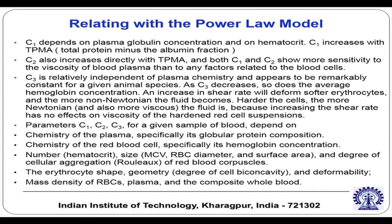It is the hematocrit — the volume fraction of red blood cells — that plays a significant role in altering blood rheology. In describing how the consistency index and behavioral index depend on hematocrit, three important parameters C1, C2, and C3 came into the picture. C1 depends on plasma globulin concentration and on hematocrit. These are not universal constants; they vary from one individual to another and from one diseased condition to another.